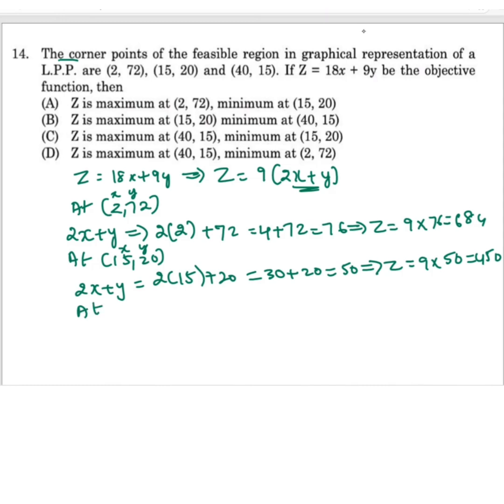Then at x equals 40, y equals 15. So this is x and this is y. So 2x + y will be 2 times 40 plus 15. 40 into 2 is 80.